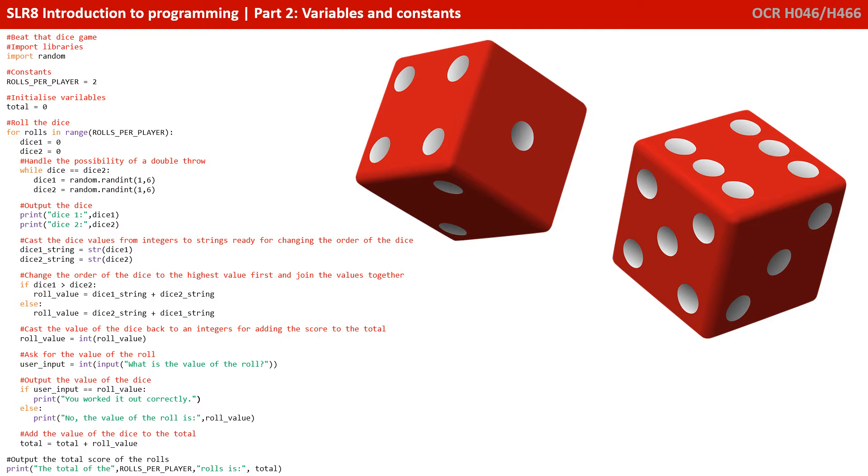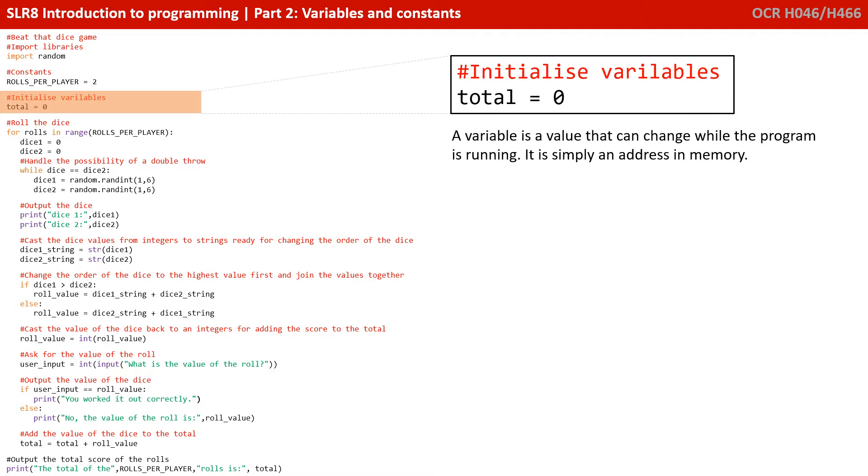So here's the outline code written in Python for this game. Let's go through it now and pull out some of those concepts we mentioned at the start of the video. So here in this line we see an example of a variable, and we write total equals 0, and that's us assigning a value to our variable total. A variable is simply a value that can change or vary, hence its name, whilst the program is running, and it's simply an address in memory.